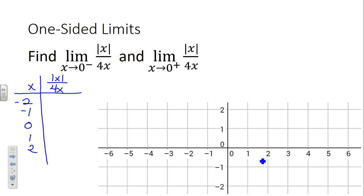Let's plug in negative 2. If we take the absolute value of a negative 2, and we divide it by 4 times a negative 2, we're going to get 2 over negative 8, which is negative one fourth. Now, we need to do a negative 1. So, the absolute value of a negative 1 over 4 times a negative 1 is going to be negative 1 fourth again.